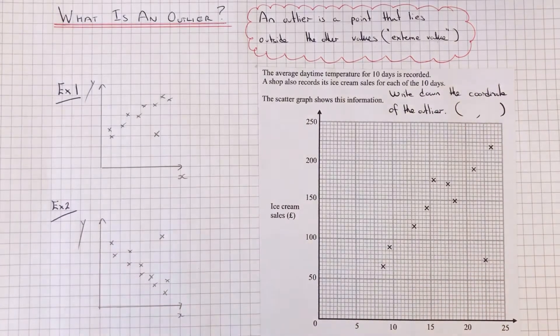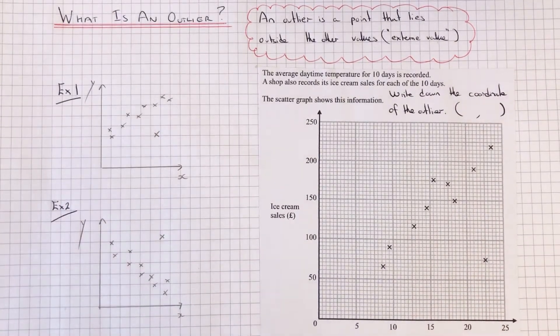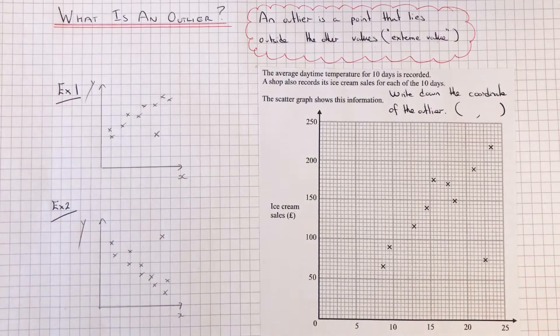Hi guys, welcome back. This is Maths3000. Today I'm going to answer the question: what is an outlier?